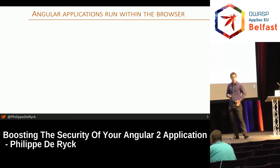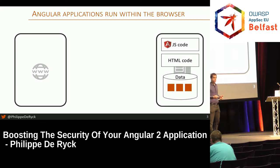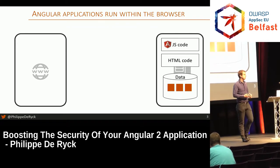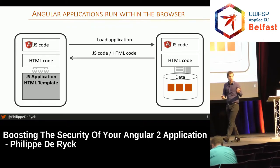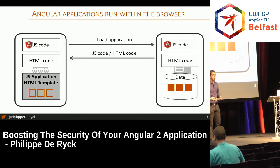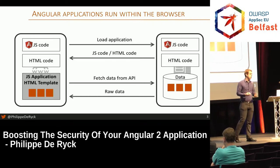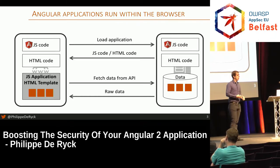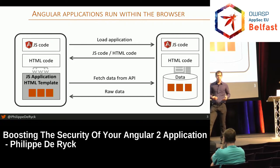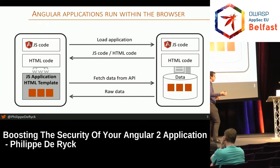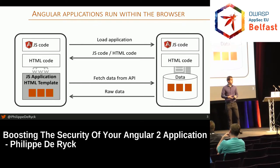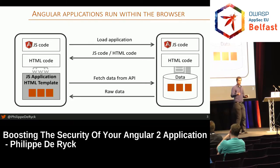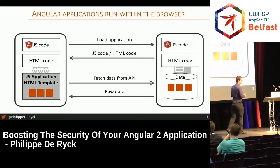An Angular application has static HTML and static JavaScript on the server. You load it in the browser and bootstrap the application. You have a template with data binding, and data will be fetched from an API and injected into that template. That's essentially what an Angular application is under the hood. The server no longer generates the pages — the server simply gives data, and the pages are generated and manipulated on the client side.